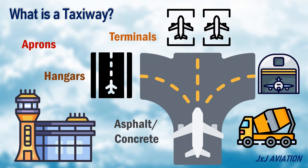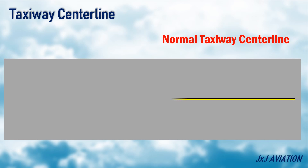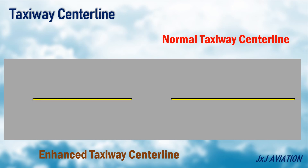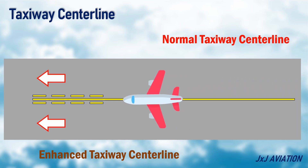Now let's look at the different taxiway markings. Taxiway centerline — there are two types of taxiway centerlines. The normal taxiway centerline is a solid yellow line with a black outline. The enhanced taxiway centerline has yellow dashes with black outline on either side of the continuous yellow line, and is used to indicate that the aircraft is approaching a runway.